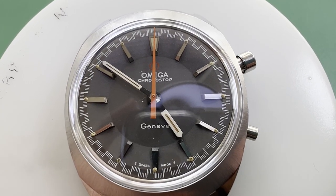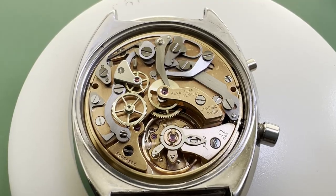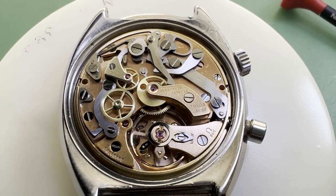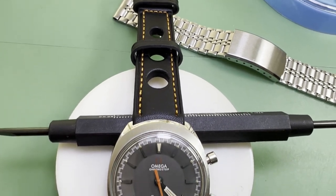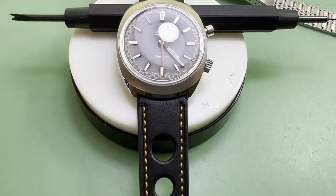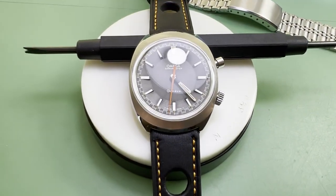For now we get the movement back in the case, turn it over, get the movement ring in, then the crown back in, case clamps to secure the movement and the case back and gasket are put back on. With a racing style strap with orange stitching to match the chronograph seconds hand this watch is ready to go.